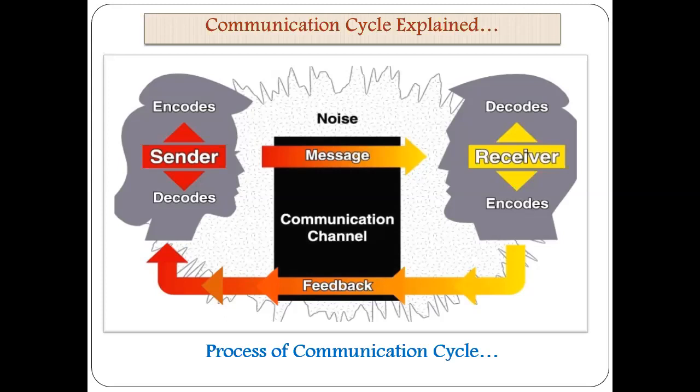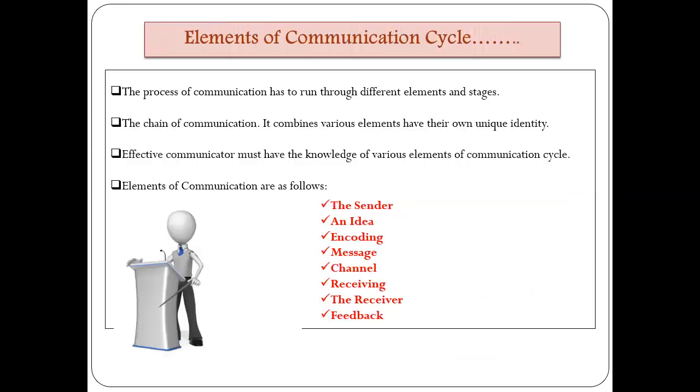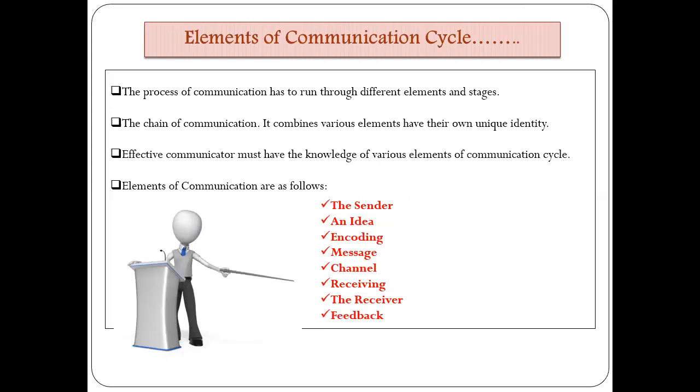After receiving is finished, the functions of the receiver begin. There are two functions of the receiver. First is decoding — understanding the message which was sent by the sender. After decoding, the message should also be encoded by the receiver, and then the last stage of the communication cycle takes place: feedback. The receiver has to send feedback to the sender. The process of communication has to run through different elements and stages; without these, communication cannot take place.